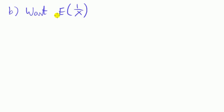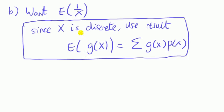Next we want the expected value of 1 over x. Now since x, the outcome of a die, is discrete, taking values 1, 2, 3, 4, 5, 6, we can use the following result. The expected value of a function of x, denoted here by g of x, is equal to the sum of the outcomes of g of x multiplied by the associated probability. Now let's look at it in the case of this example so that it makes more sense.